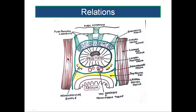Laterally is the levator ani muscle covered by its fascia — the parietal layer of pelvic fascia. Posteriorly is the rectum, separated from the prostate by the rectovesical fascia of Denonvilliers, and posteriorly it is related to the pre-rectal fat. Posteriorly, the prostate is also related to two more structures.